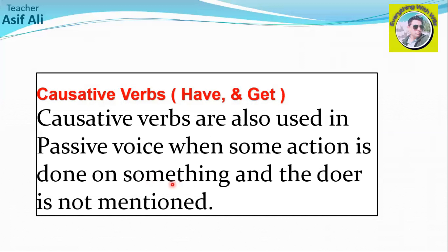This is a very simple difference between active causative and passive causative. In active causative, we use causative words and after them we mention a person — the one who will be doing the action. After causative verbs we will use the person whom we will be causing to do something. In passive causative, after the causative verb we use something — not someone — something on which the action will be done.